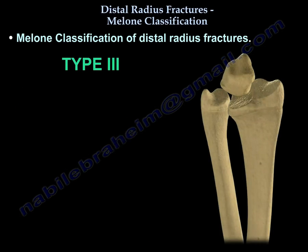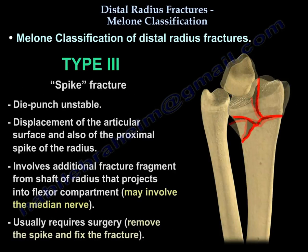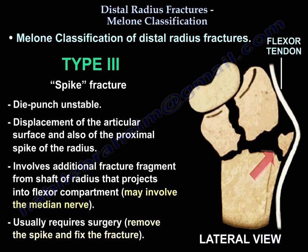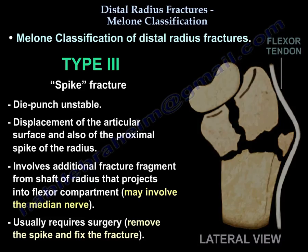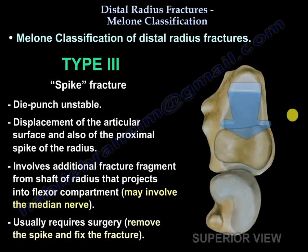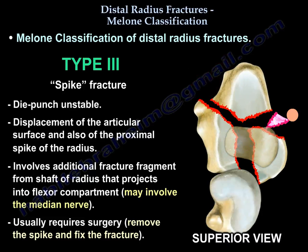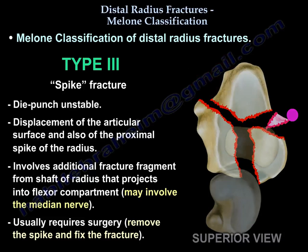Type three is a spike fracture. It is a die punch fracture — unstable, displaced — and you also have a spike from the radius. Usually that spike will project into the flexor compartment and may involve the median nerve. The treatment is usually surgery to remove the spike and to fix the fracture.